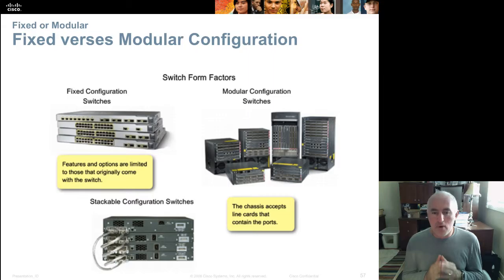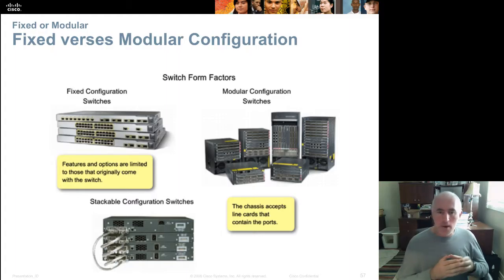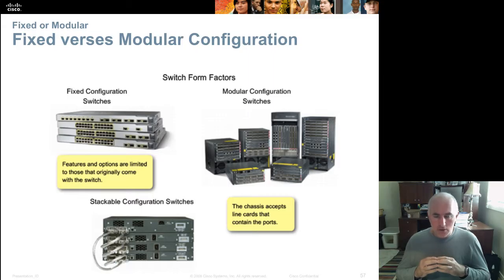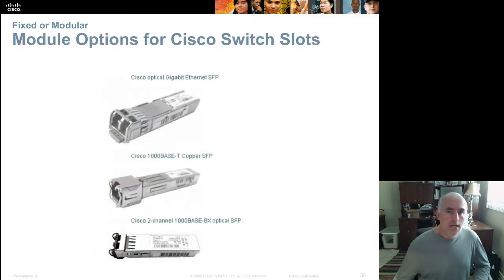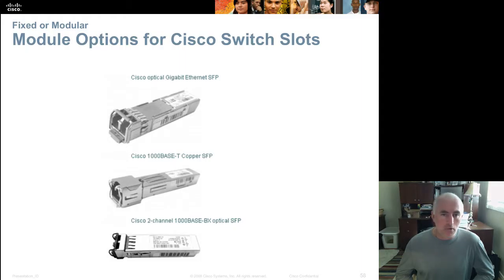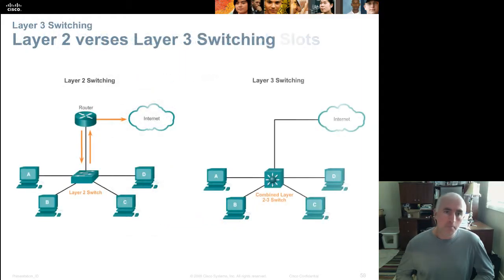Stackable configuration switches allow you to take a whole stack of switches, cable them together with a special stacking cable, and have them operate as one giant switch. This costs about $1,000 per switch on Cisco hardware plus proprietary stacking cables at about $45 each. The switches are connected in a loop: switch 1 to 2, 2 to 3, 3 to 4, and 4 back to 1. Additionally, SFP (Small Form-Factor Pluggable) modular ports allow you to pull out a copper port and replace it with a fiber port or other port configuration options.